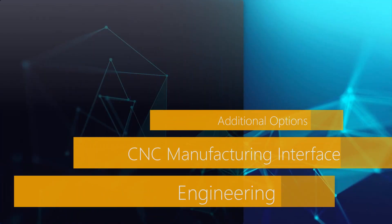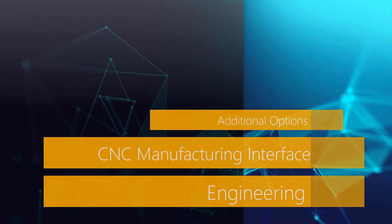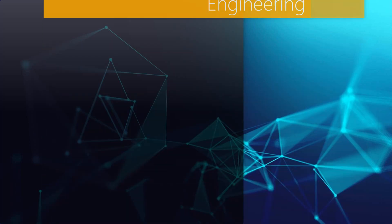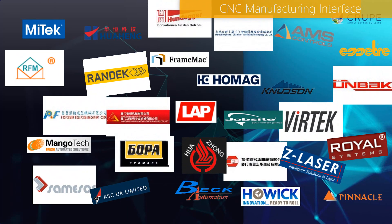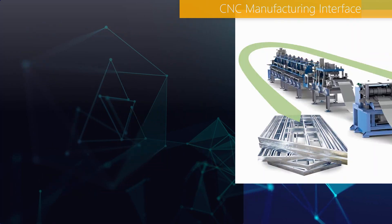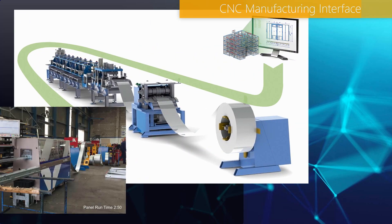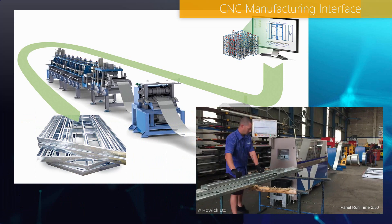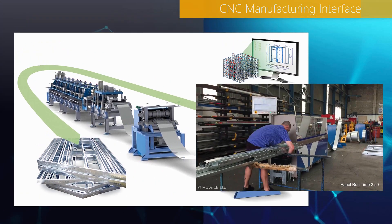For our three packages that include framing, we offer two additional options, one of which is the CNC manufacturing interface. This allows you to accurately output the framing to one of over 25 supported roll formers and saws. These links are extremely precise, and the framing that is modeled will be a true representation of the element the machine produces.